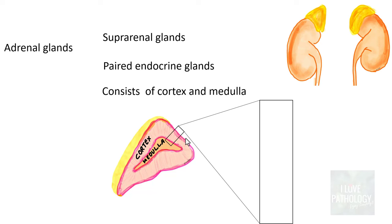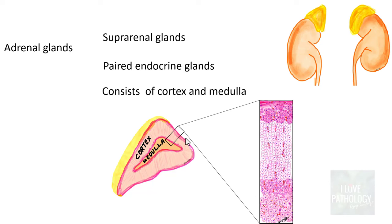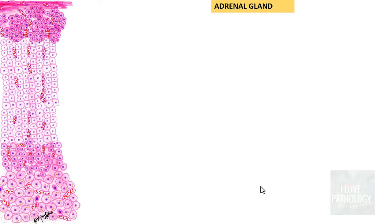If you look at the histology of the Adrenal Gland and take a slice, you can easily make out that the Cortex forms the bulk of the Adrenal Gland and the small inner portion is the Adrenal Medulla. The Adrenal Gland has a very thick capsule, and the Cortex is divided into three distinct zones.